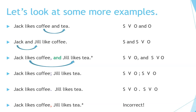Jack likes coffee; Jill likes tea. The semicolon is in between the comma and the period — it's like they can't decide whether to use a comma or a period, so they use them both. The pattern is subject-verb, object, semicolon, subject-verb, object. Jack likes coffee. Jill likes tea — notice the separation between the ideas. The pattern is subject-verb, object, period, subject-verb, object.